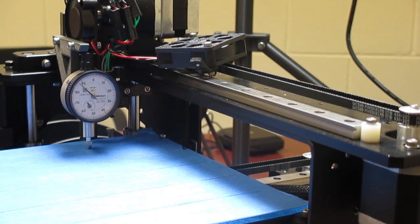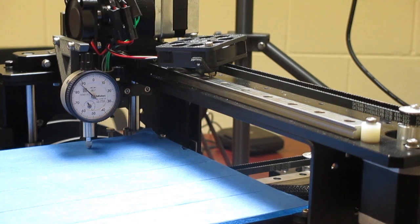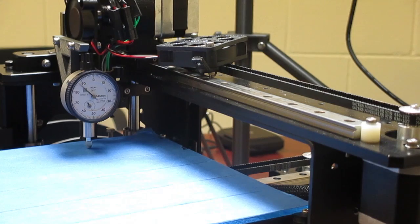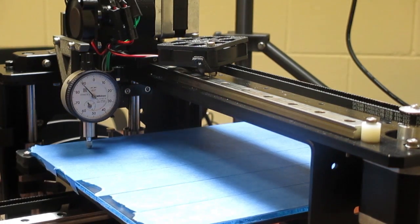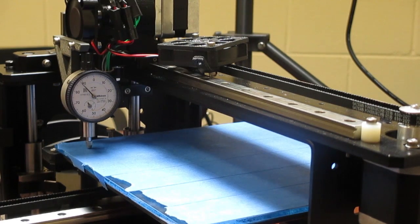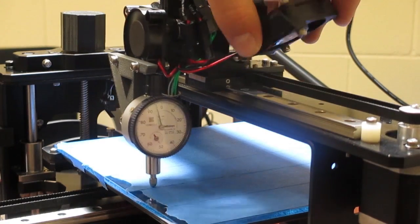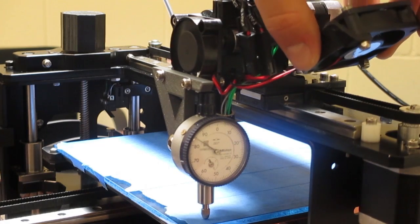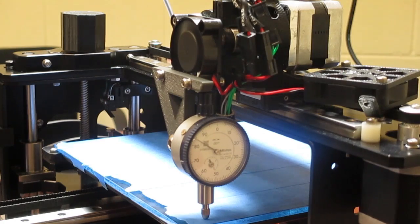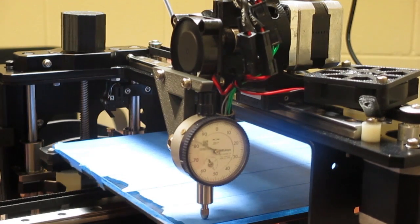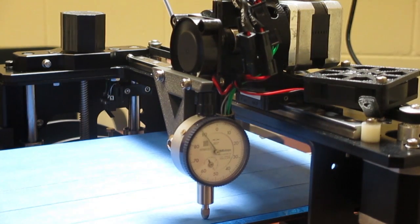Now that you've gotten your bed close to level, we will show you what it looks like. As you can see, the value of the needle stays at about the same spot throughout the entire travel. Now move in the X direction. As you can see, the needle stays in about the same spot across the entire X direction. It's important to take your time when leveling the bed, as this has a large impact on the quality of your prints.